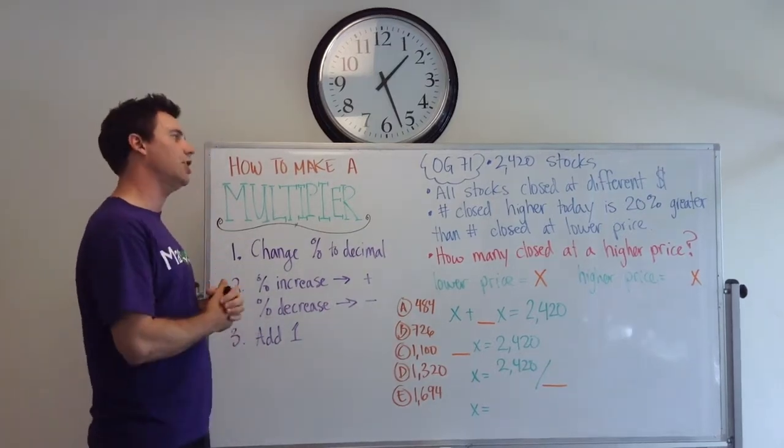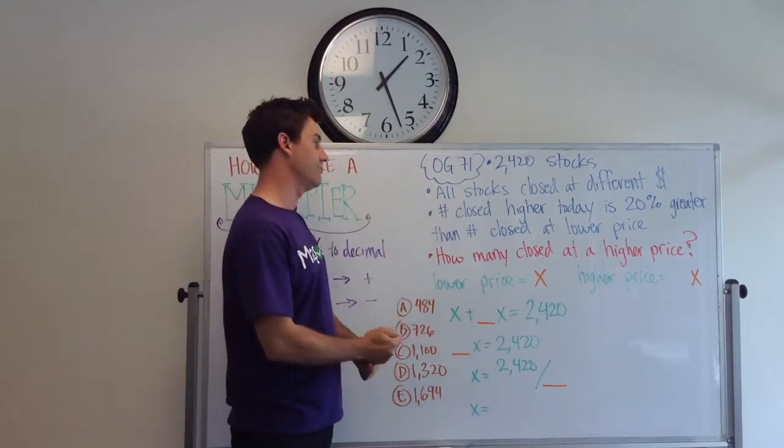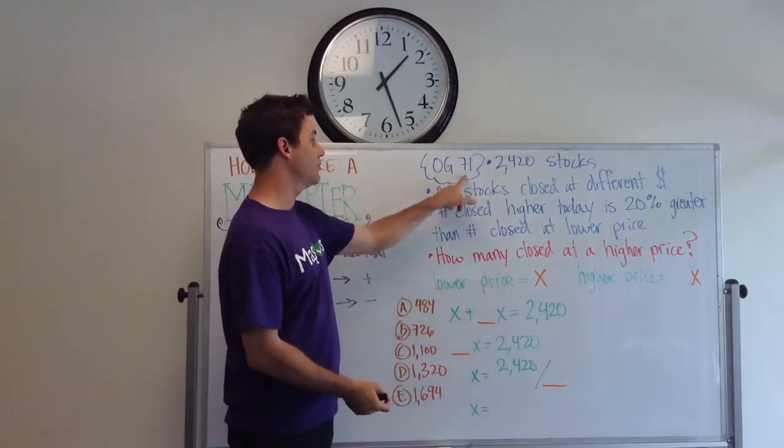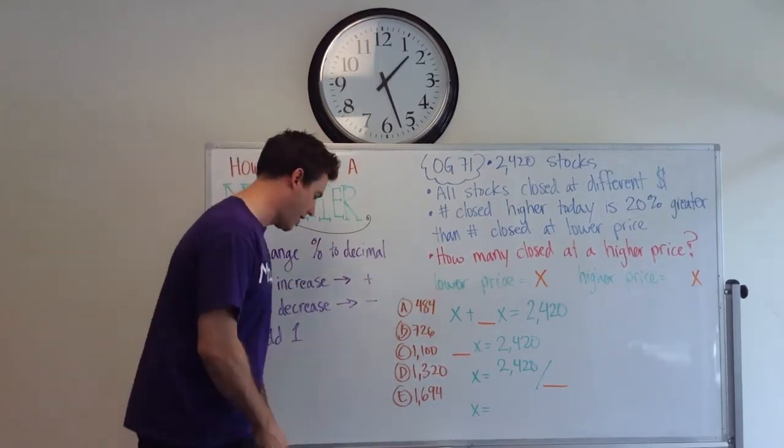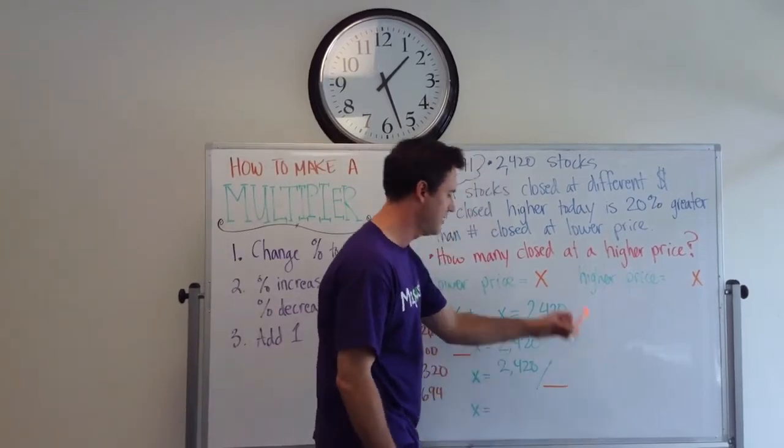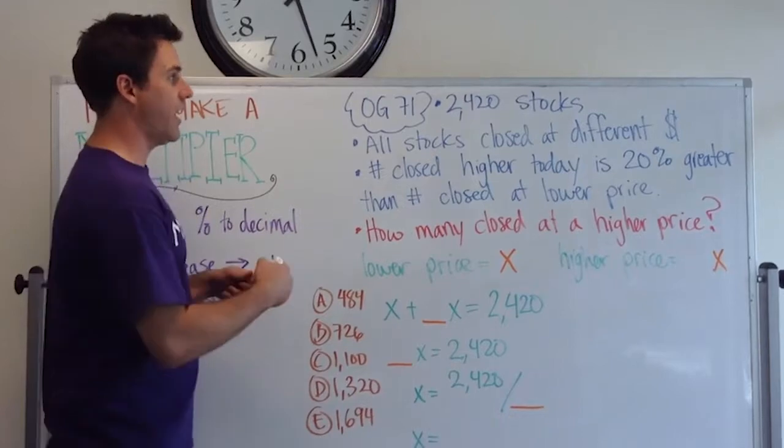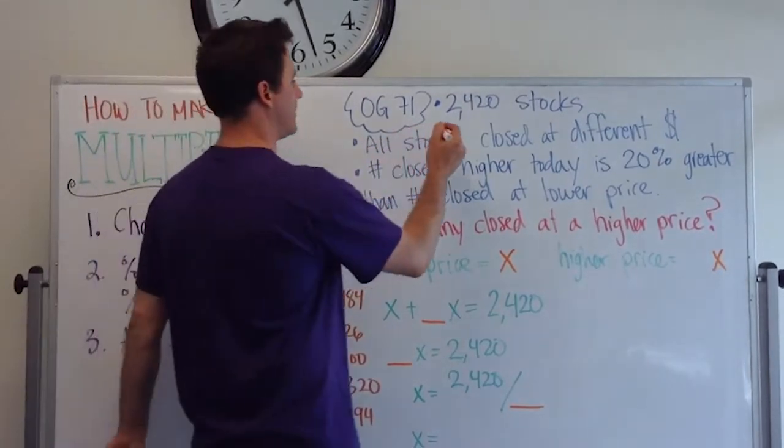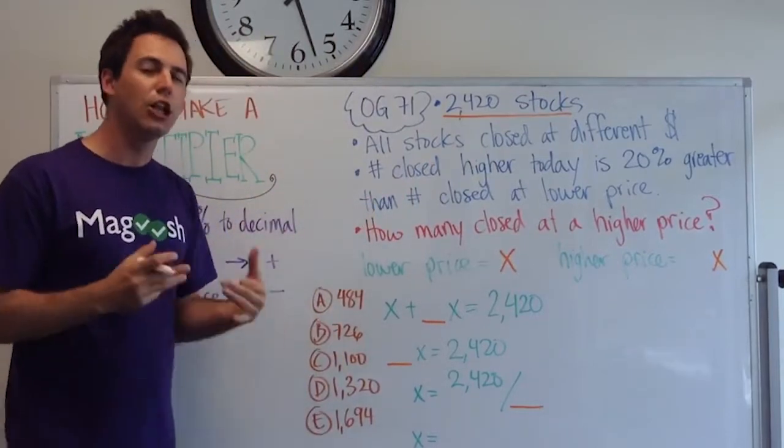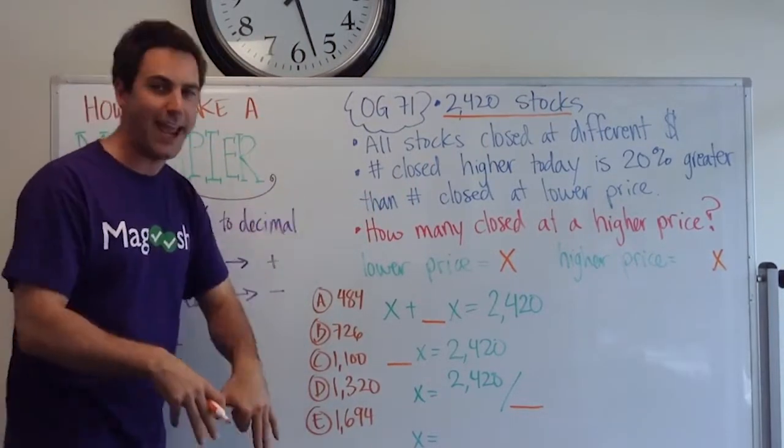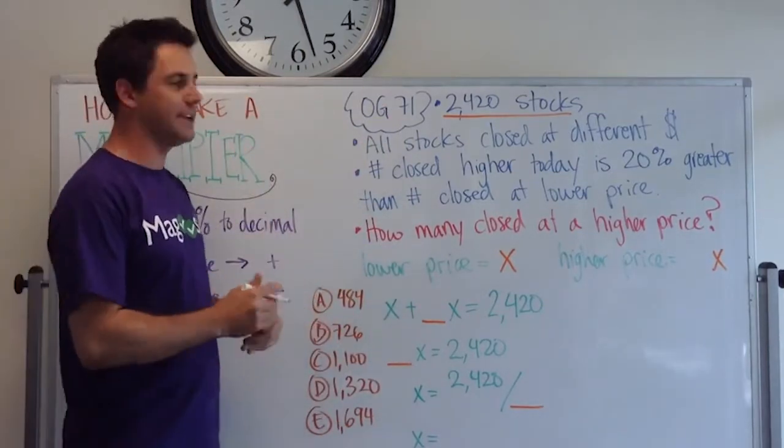This is a problem solving question and it's in the 13th edition. It's probably in the 12th edition too, but I was using the 13th and it was question number 71. I didn't write out the whole question because it's very long, so I'll abbreviate it a little bit here. In this question, we have 2,420 stocks. That's what we're told. And we're told that all of the stocks closed at a different price today than yesterday.